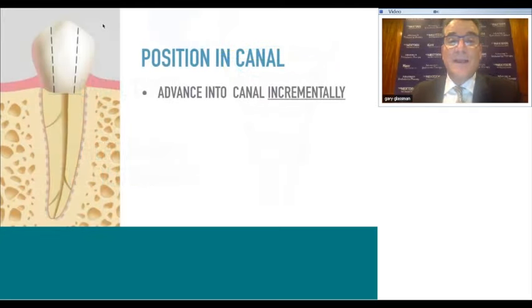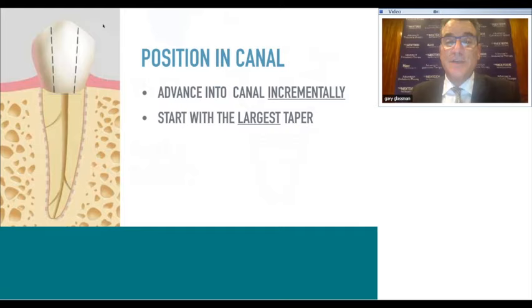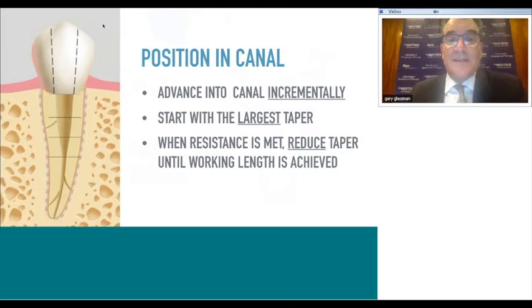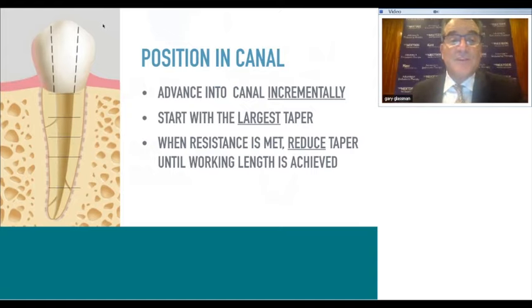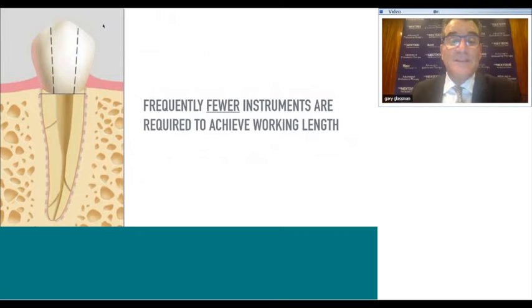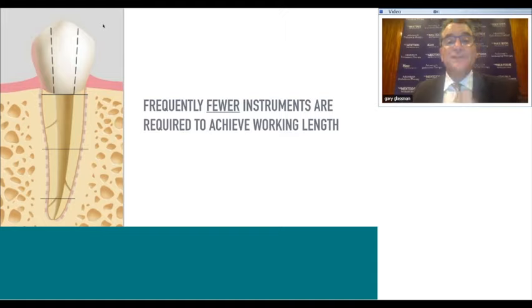When resistance is met, reduce the taper until working length is achieved. Sometimes only three instruments are needed to establish taper—sometimes just one, depending on canal size, curvature, and dentin density. Softer dentin shapes more easily than sclerotic dentin. Most endodontists agree: apical preparation means creating a deep apical preparation in the apical one-third. Canals instrumented to larger apical sizes allow more irrigant closer to the apex. We no longer keep the apical terminus as small as possible—we keep it as small as practical, large enough to accommodate irrigant delivery systems.